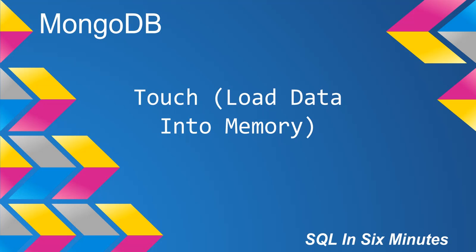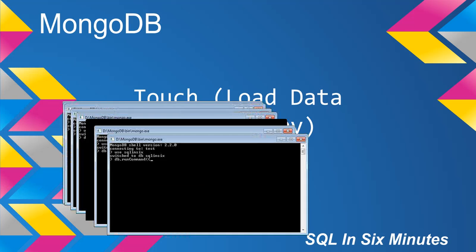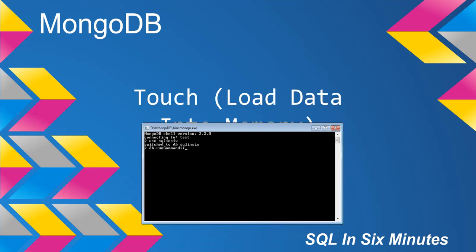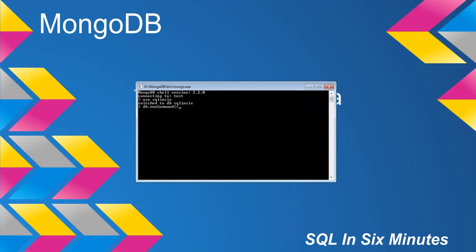We're going to start out by looking at the db.runCommand. I'll go ahead and point out where we want to get into the specifics here. So we have db.runCommand, we're going to open up a bracket and we're going to say touch, and this is where we pass in the collection name, which in this case is fast data.